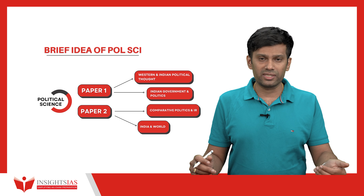The optional subject has been performing well since 2015, with many political science students getting ranks and interview calls. The biggest advantage is its huge overlap with general studies. Even if you are not taking political science, you have to read parts of it in general studies anyway. Since political science overlaps so much with GS, it reduces your overall preparation time.